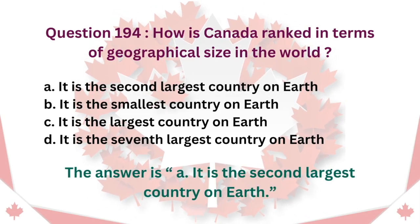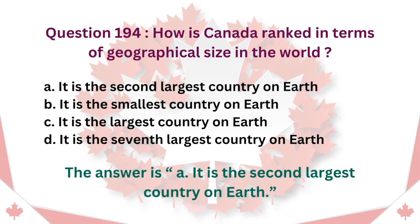Question 194: How is Canada ranked in terms of geographical size in the world? A. It is the second largest country on Earth. B. It is the smallest country on Earth. C. It is the largest country on Earth. D. It is the seventh largest country on Earth. The answer is A. It is the second largest country on Earth.